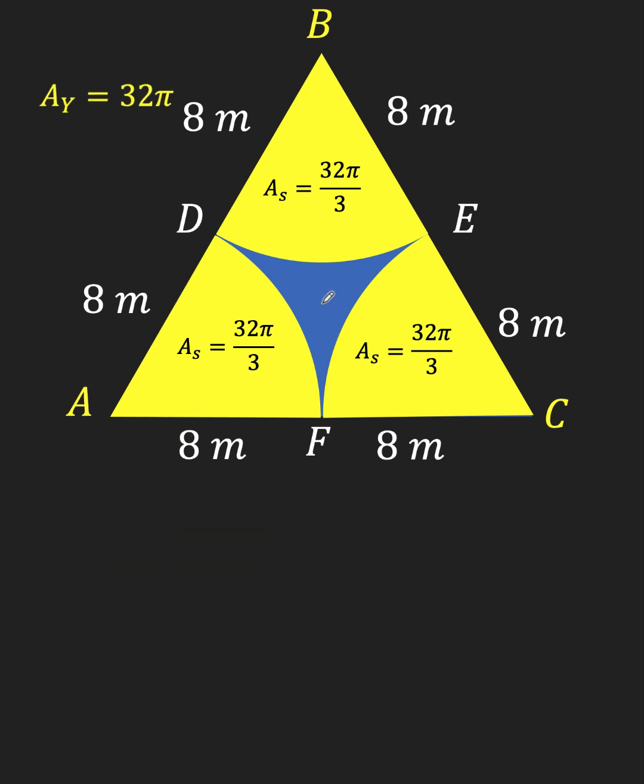So, we need to find what is the area of the equilateral triangle itself. The formula for the area of an equilateral triangle is square root of 3 over 4 times the square of the length of one of the sides.